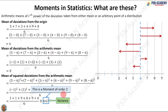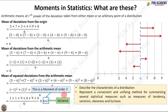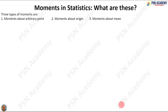Why are we learning moments — that is, means of deviations? By getting the moments, you can describe the characteristics of a distribution. You can also summarize several statistical measures such as measures of central tendency, variation, skewness, and kurtosis. That is why we are learning moments. There are three types of moments: moments about an arbitrary point, moments about the origin, and moments about the mean.